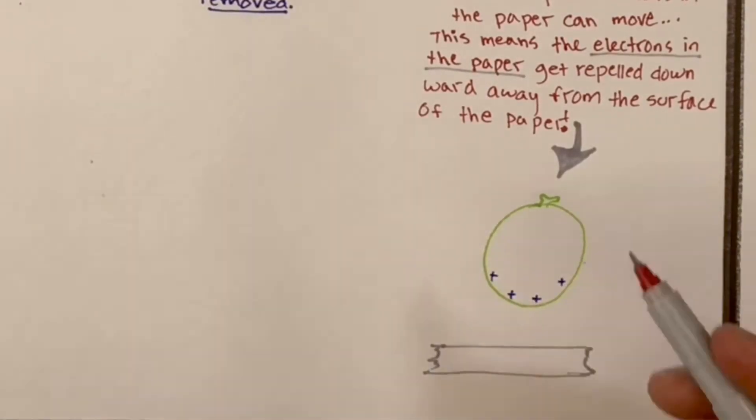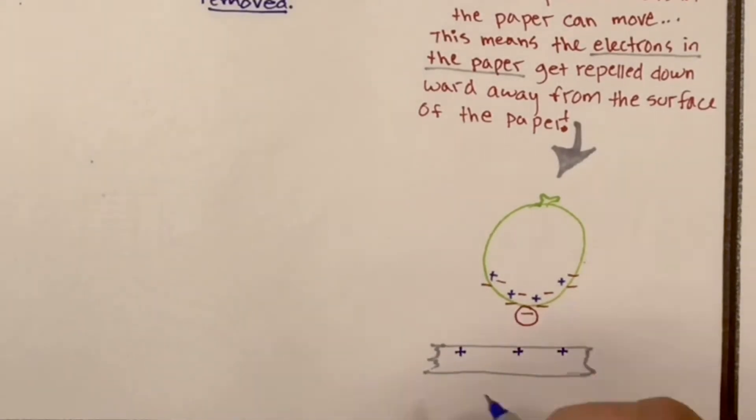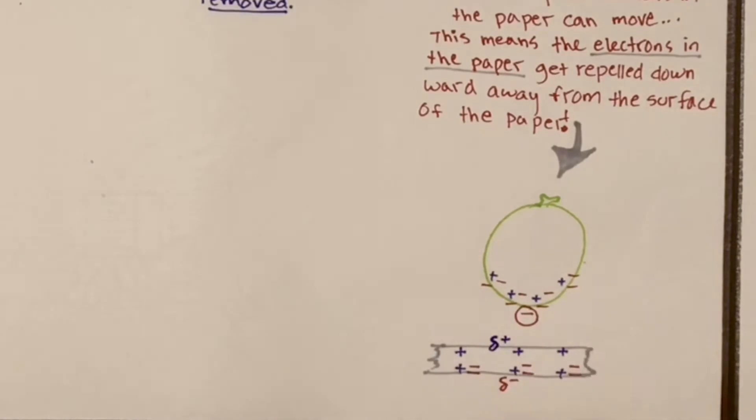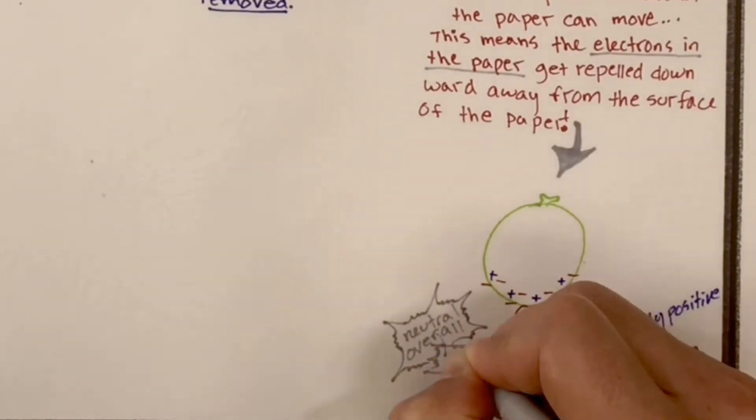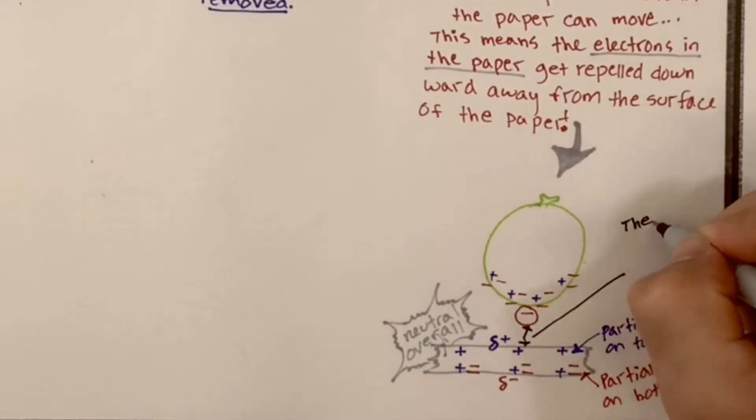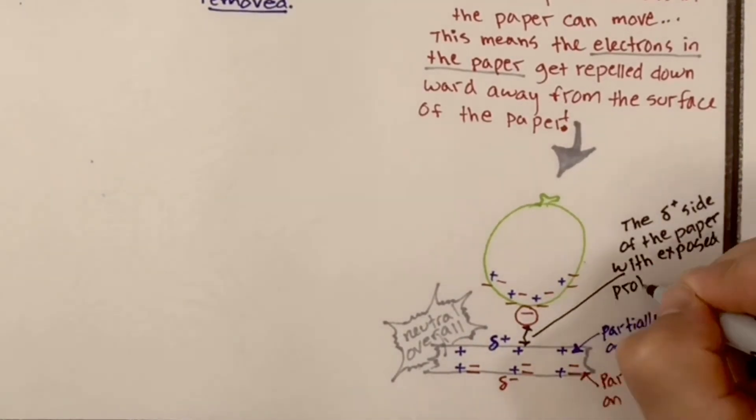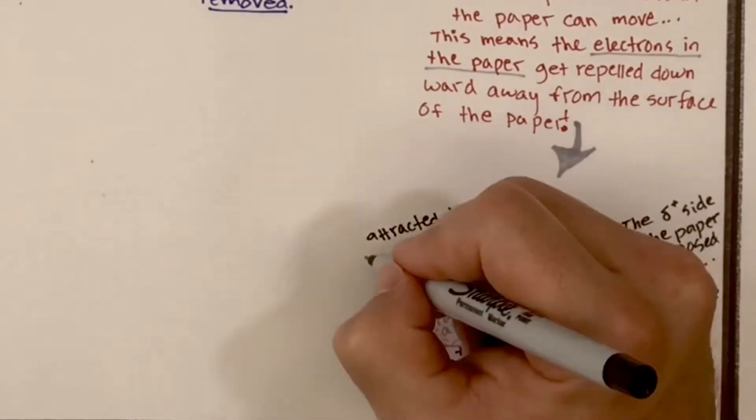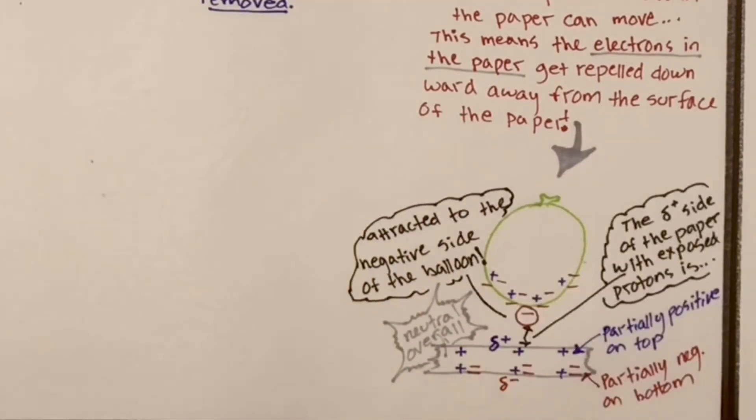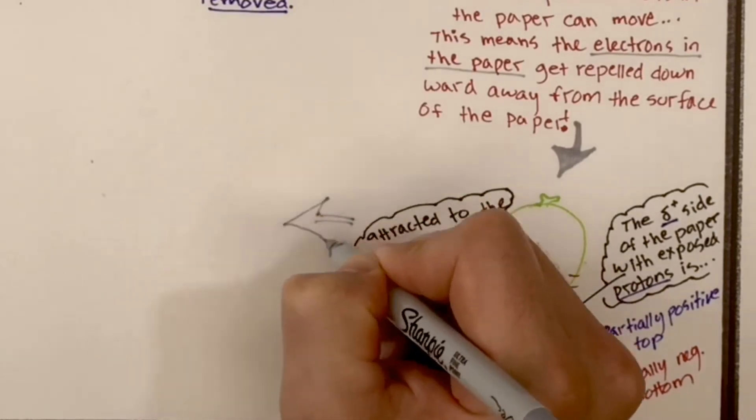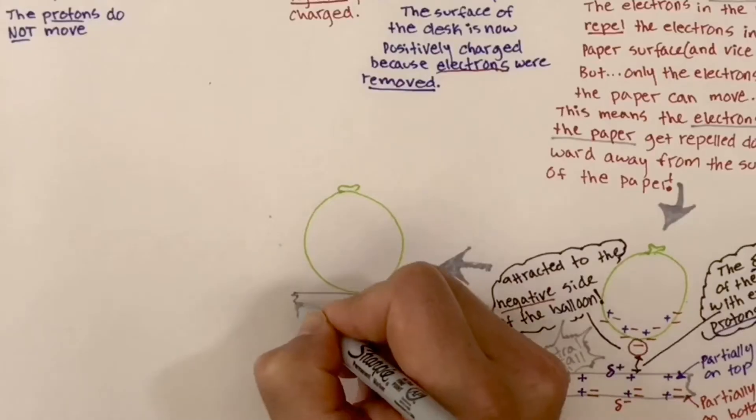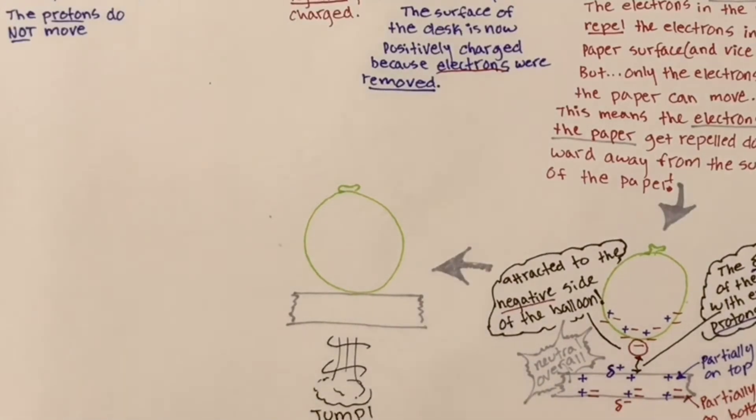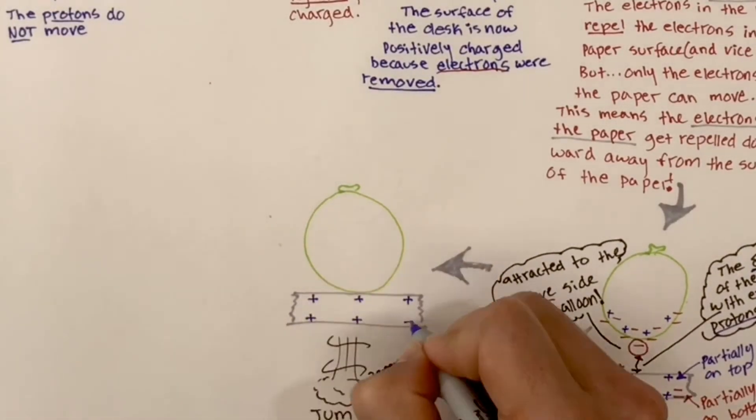So let's see why it leads to that jumping there. Now we have our negative balloon. It has the extra electrons. The surface of our paper now is slightly positive. It's partially positive because the electrons have been pushed downwards, whereas the bottom of the paper is partially negative. But overall, it's neutral because it hasn't lost or gained any electrons or protons, whereas the bottom of the balloon is truly negative. So what does that mean when you have a negative thing near a positive thing? The balloon is attracted to the positive side of those paper shavings. It's going to jump up there. And that's what we saw.